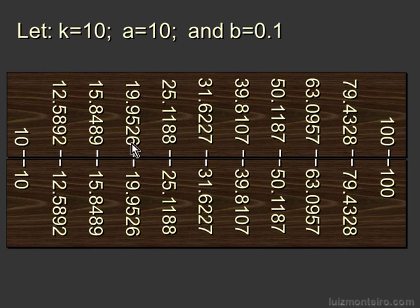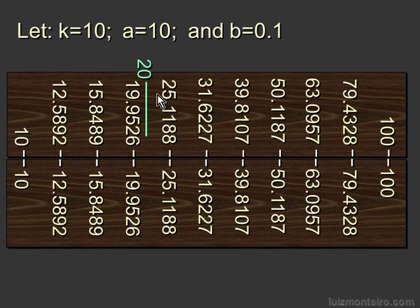Notice that the numbers are not whole numbers. So for example, between the 19.9526 and the 25.1188, there has to be a 20. And we're going to try to find out what distance from the origin that 20 is going to be.